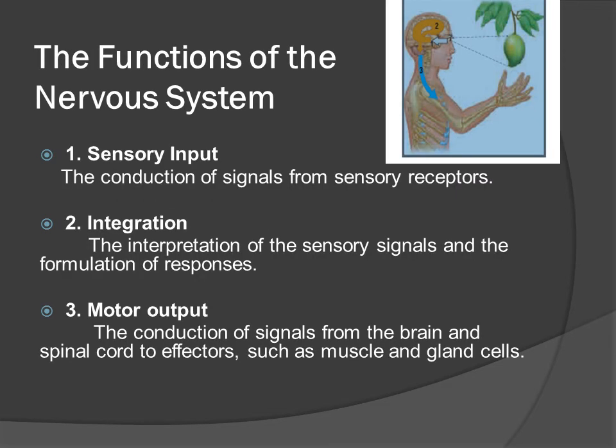The functions of the nervous system include: sensory input — the conduction of signals from sensory receptors; integration — the interpretation of sensory signals and the formulation of responses; and motor output — the conduction of signals from the brain and spinal cord to effectors such as muscles and glands.